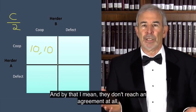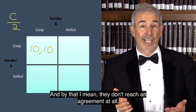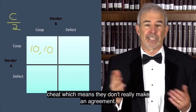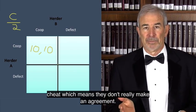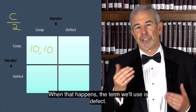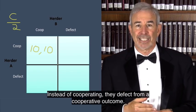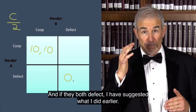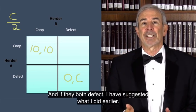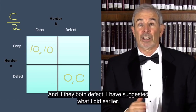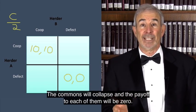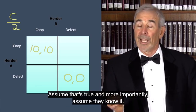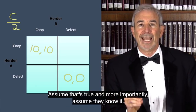What happens if they fail to cooperate? And by that I mean they don't reach an agreement at all, or they do reach an agreement, but one or more of them secretly cheat, which means they don't really make an agreement. When that happens, the term we'll use is defect. Instead of cooperating, they defect from a cooperative outcome. And if they both defect, I have suggested what I did earlier. The commons will collapse and the payoff to each of them will be zero. Assume that's true. And more importantly, assume they know it.